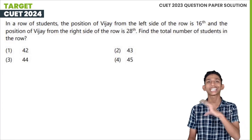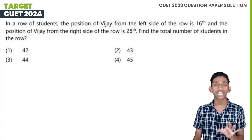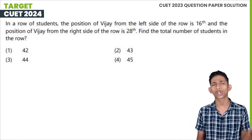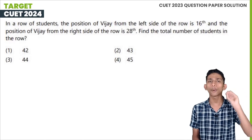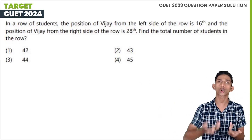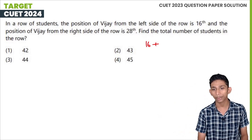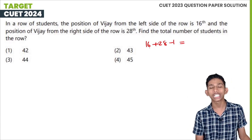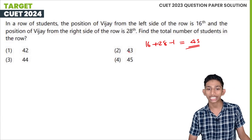The first question is a ranking and order type. In a row of students, the position of Vijay from the left side is 16, and from the right side is 28. The total number of students is 16 plus 28 minus 1, which equals 43.